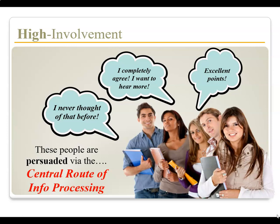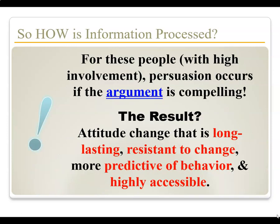These people are persuaded through the central route of information processing. I could be wearing pajamas and have messy hair, but if the quality of my argument is strong, I can persuade these people. For those with high involvement, persuasion occurs if the argument is compelling, and the result is a marketer's dream — any change in attitude is long lasting, resistant to change, and allows more accurate prediction of future behavior.